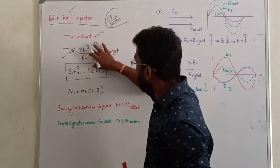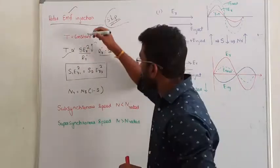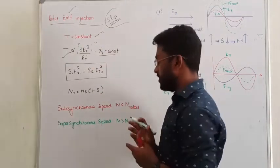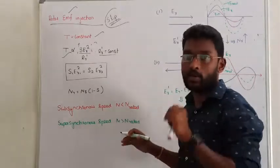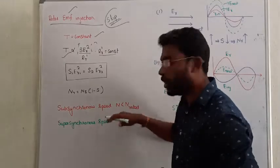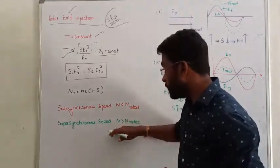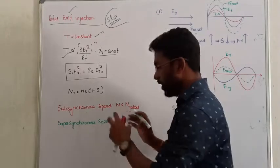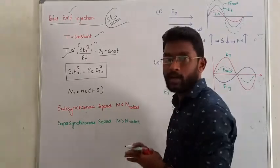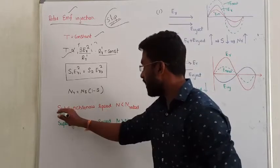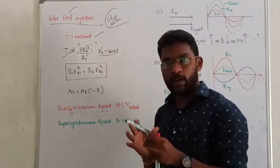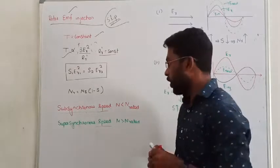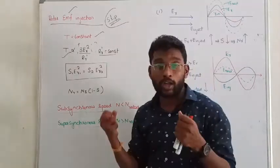Suppose if we reduce the injected voltage — that is, the rotor voltage — then the slip value will increase. There are two cases, which is the biggest advantage of the Rotor EMF Injection Method: we can maintain two types of speed control. Case one is below rated speed control, and case two is above rated speed control. Below rated speed is called sub-synchronous speed; above rated speed is called super-synchronous speed.